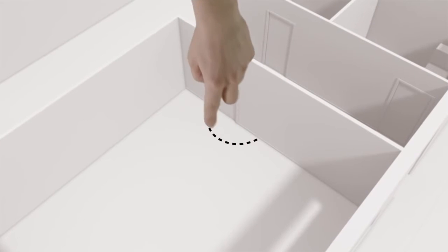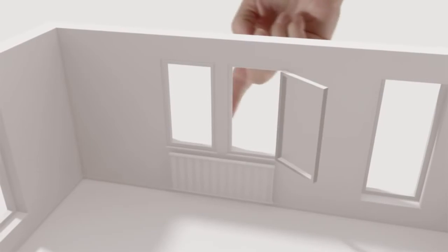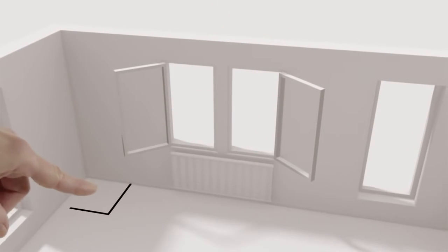Don't forget to mark the amount of space the doors and windows need to open. Check the angles of your corners and mark any that are not 90 degrees.